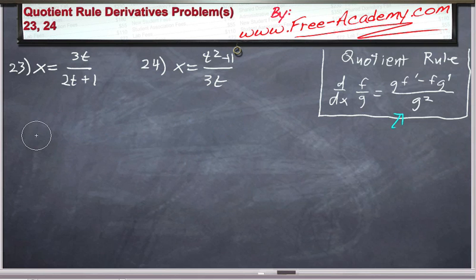As long as you remember the formula, and you will need to memorize this formula for your classes I'm almost positive, the quotient rule is very easy to do because it's generally obvious what's going to be f and what's going to be g.